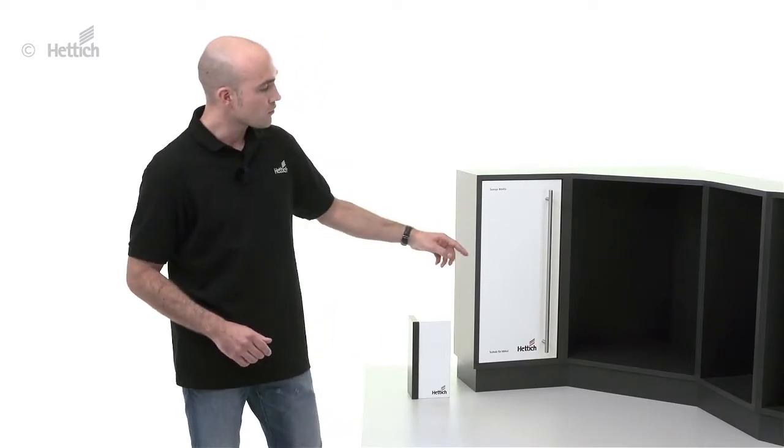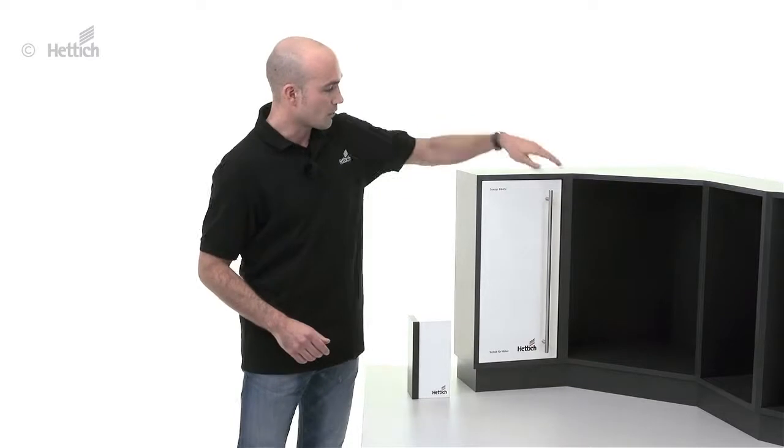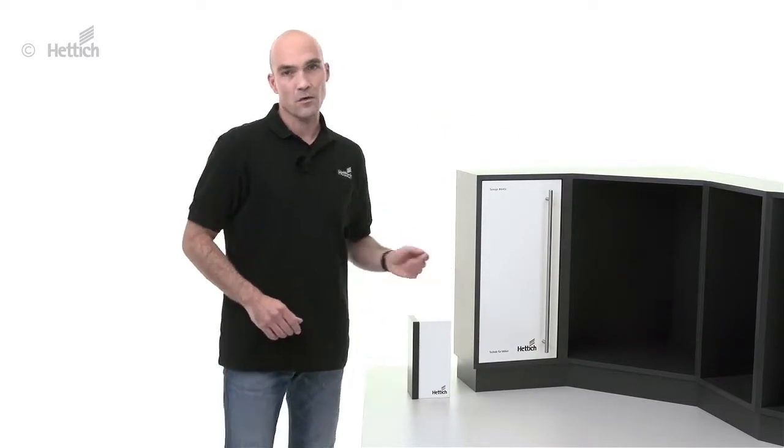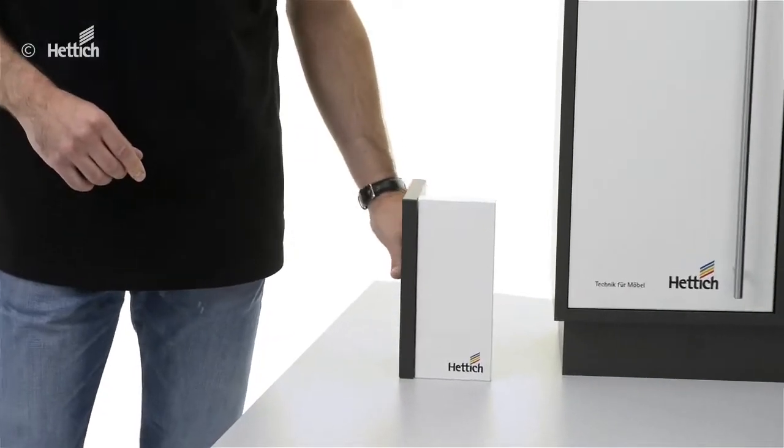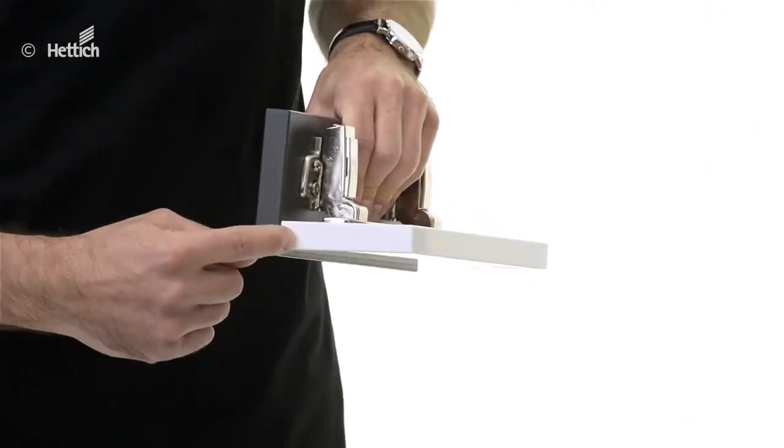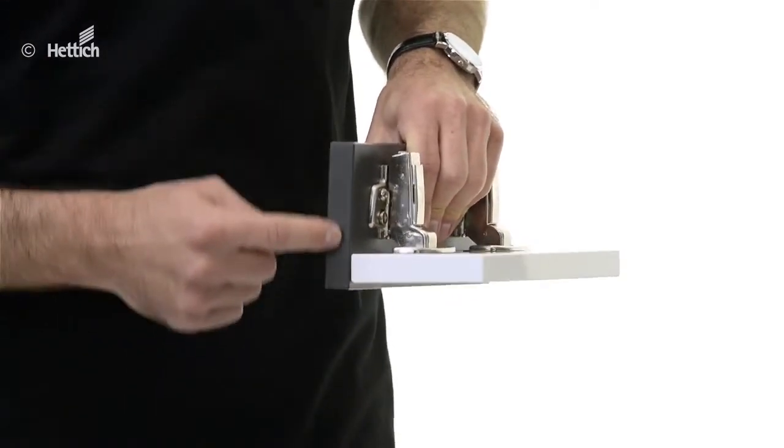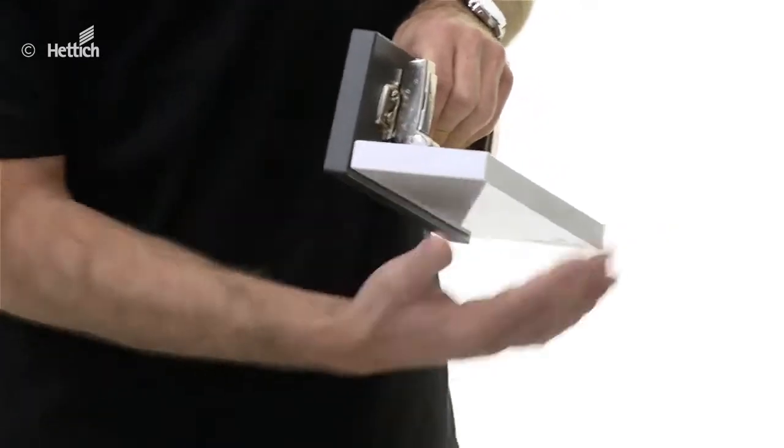The specialty of inset applications is that the side panels and the top and bottom panel are surrounding the door. This is often used as a design element. On this mock-up you see that the door is next to the side panel and also a minimum reveal is needed to open the door.